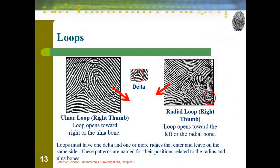Our loops include the radial loop and the ulnar loop, depending on where the loops start and end. For example, looking at the right thumb: if it curves toward the ulna bone, it's an ulnar loop; if it opens toward the radial bone in your wrist, it's a radial loop. We won't use these specific distinctions much in class.